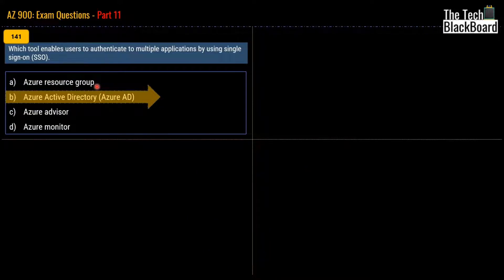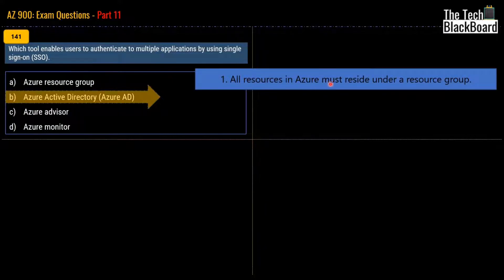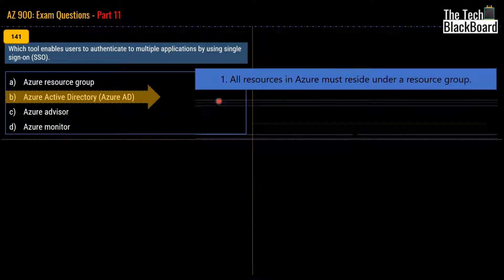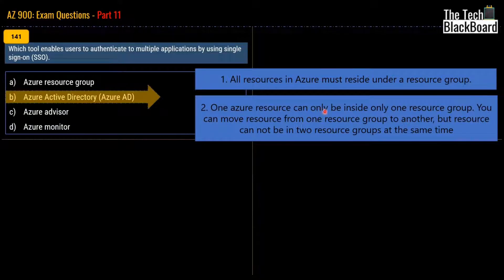From the exam point of view, here are two important points about resource groups. First, all resources in Azure must reside under a resource group — you cannot have a resource that does not belong to any resource group. Second, one Azure resource can only be inside one resource group at a time. You can move resources from one resource group to another, but a resource cannot be in two resource groups simultaneously. There may be questions in the AZ-900 exam asking whether a resource can be in multiple resource groups, and the answer is no.